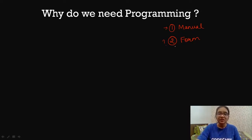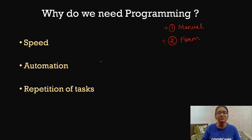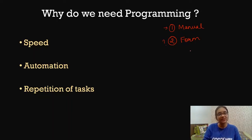Why do we actually need programming? We need programming for three things. First, because we want our tasks to be carried out at speed — they should not take a lot of time. Second, we want automation. Automation means that we want some stuff to be done on its own. Like here, when we type the details and just click a button, automatically all the details of the student get stored. That is automation, and we can achieve it using programming.